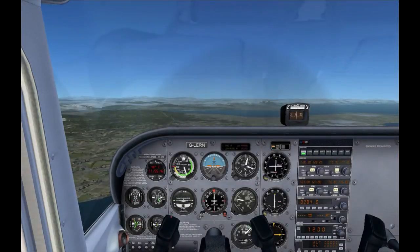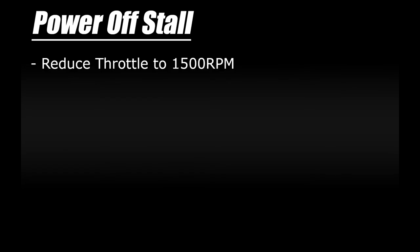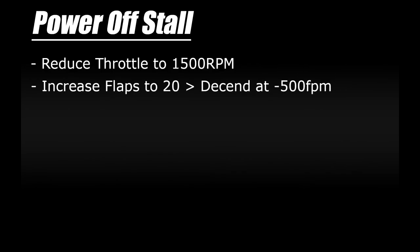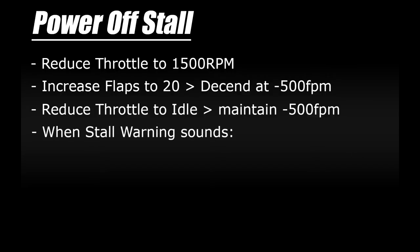Here we are flying along at 3,000 feet. I'll talk you through what I'm going to do for this power-off stall. The first step is to reduce the throttle to 1,500 RPM, then increase the flaps to 20 degrees in increments. Rather than holding altitude, we'll let the plane descend at about 500 feet per minute and trim for that. Then once settled, we'll reduce power to idle but try to hold that 500 feet per minute descent. The plane will keep pitching up as we hold back on the stick, and the speed will eventually drop to a dangerous level, at which point we'll hear an audible warning in the cockpit.